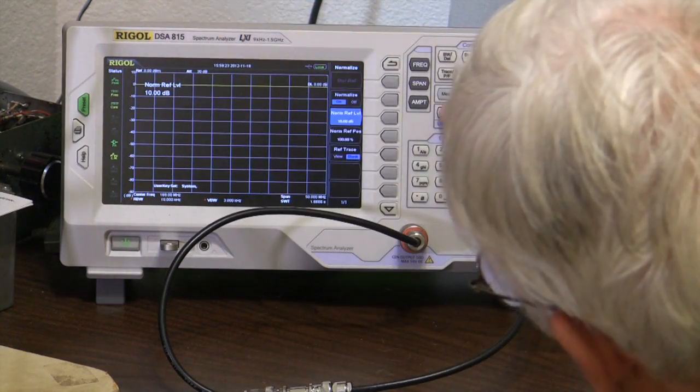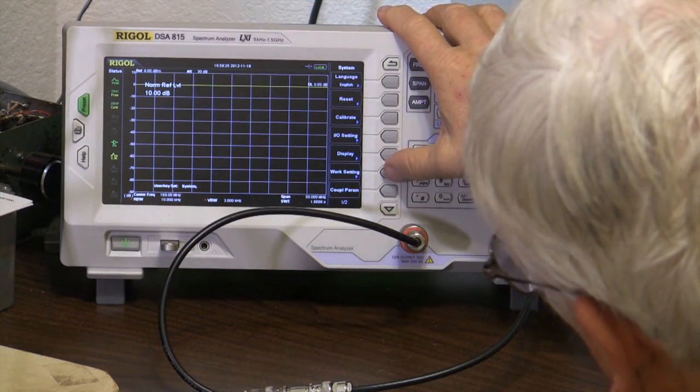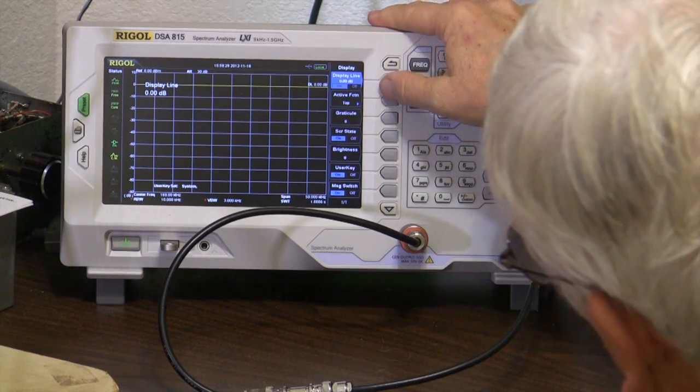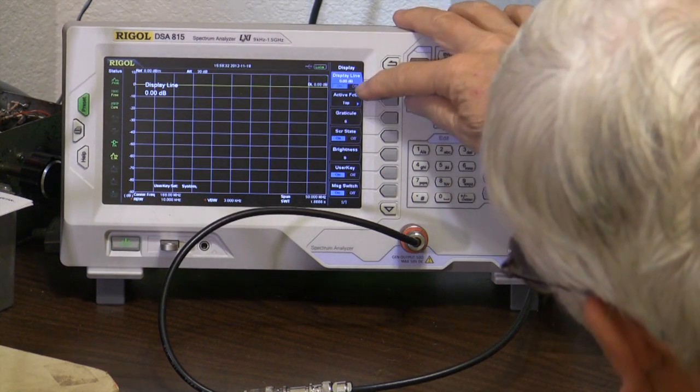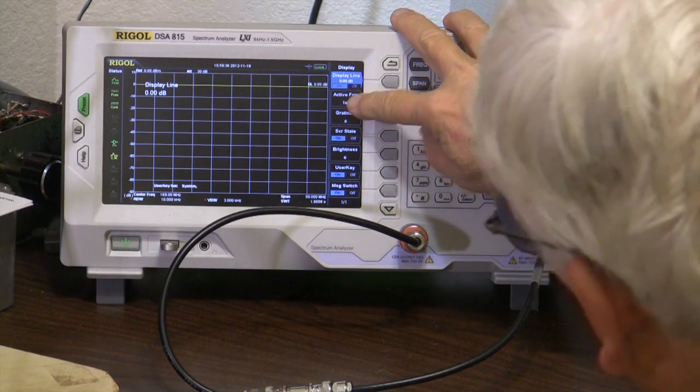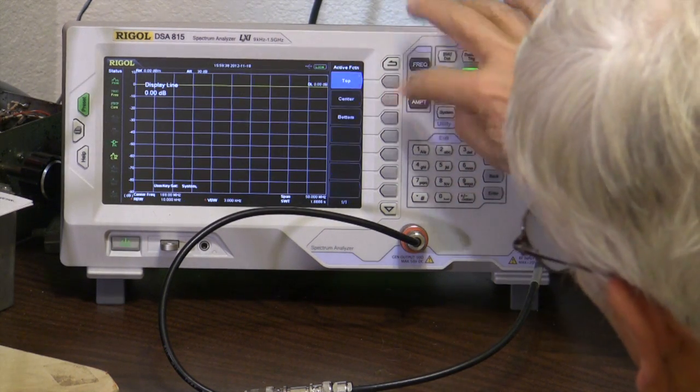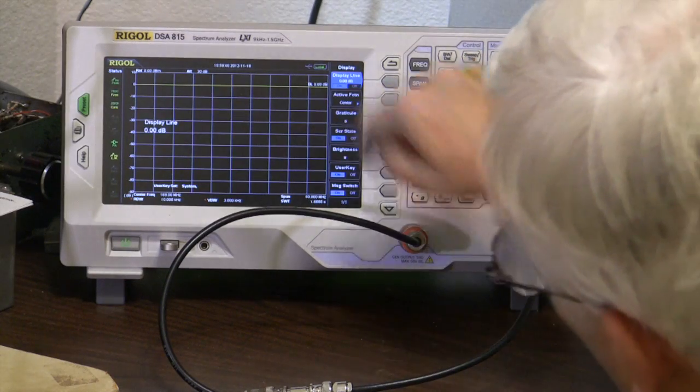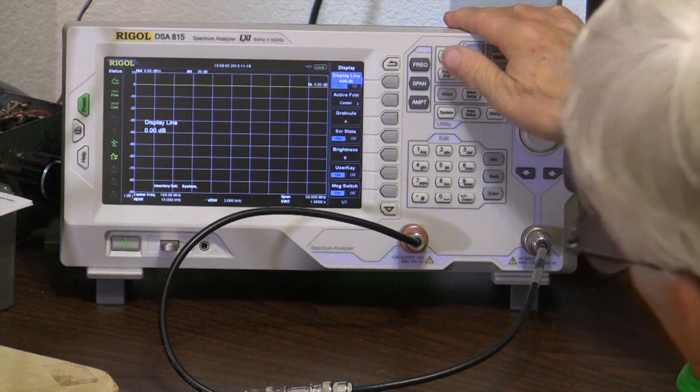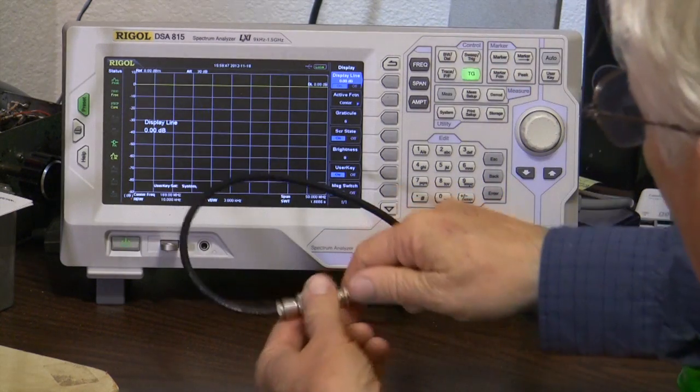All right. So now we're here. But this is in the way. So we'll go to the system. And we'll change the display line here. Or not. No, the active function to center. All right. It gets that down here. So that's a little better. And out of our way. So there we go. We'll pull this off.